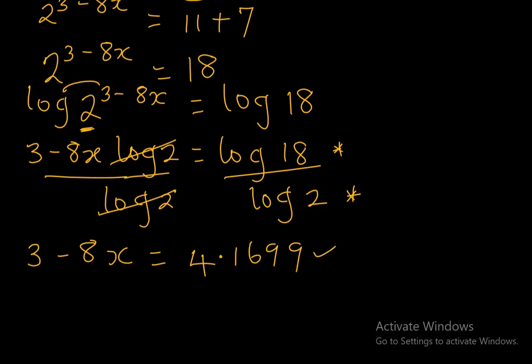Alright, now at this point we collect like terms. So we move minus 8x to the right hand side and bring 4.1699 to the left hand side.